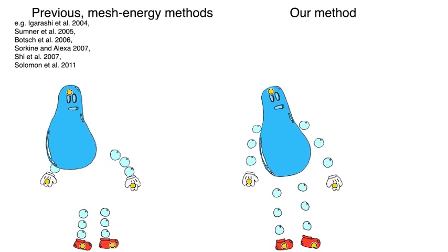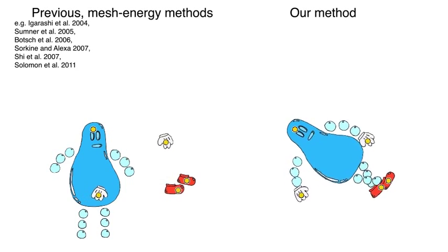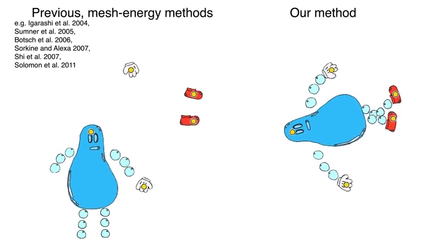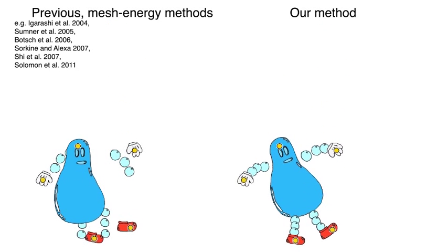Typically, variational mesh deformation methods require constraints on each connected component. In contrast, our method easily incorporates multiple connected components, coupling them via the input skinning weights.